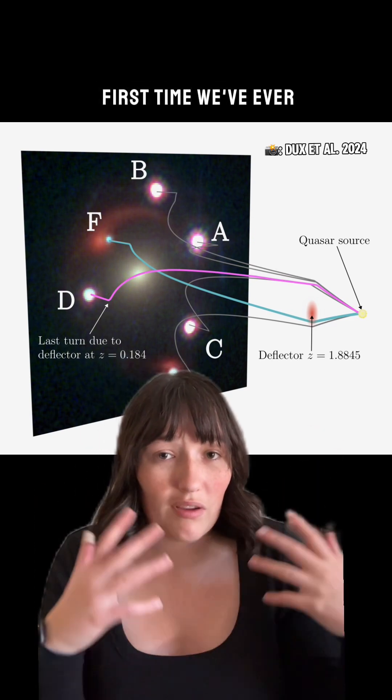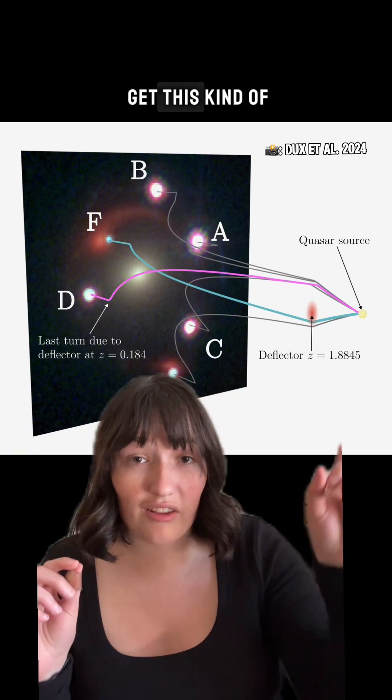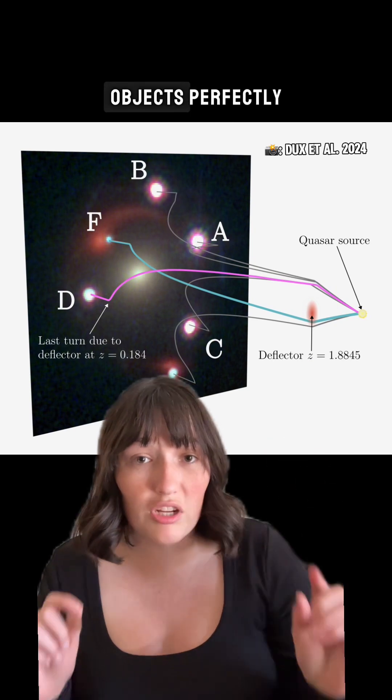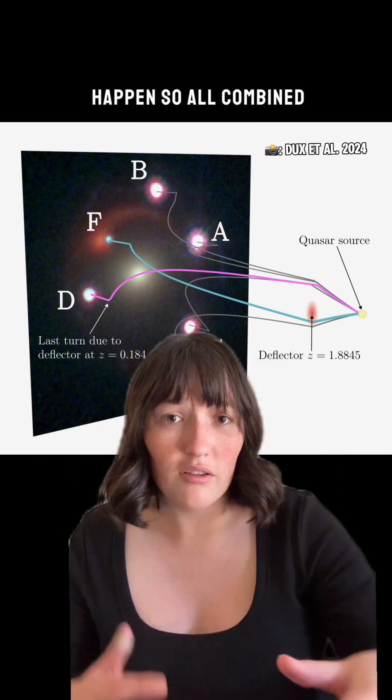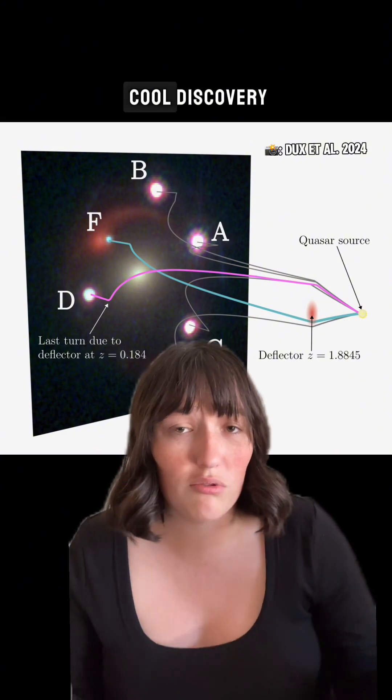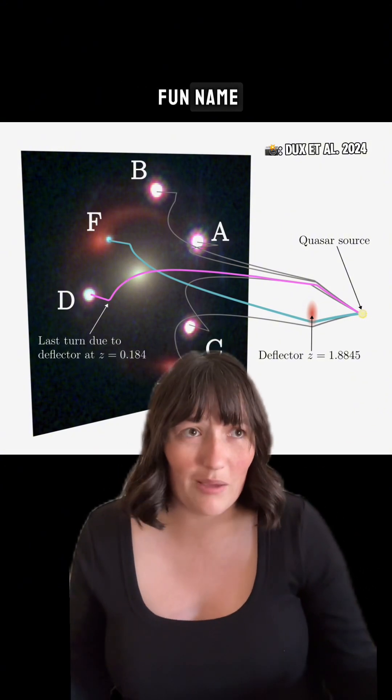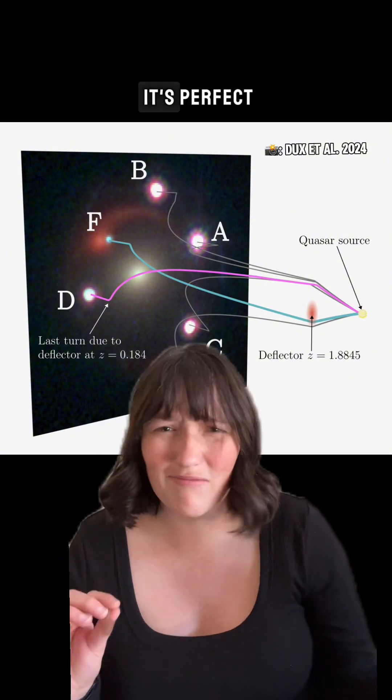And this is the first time we've ever seen this, because it's hard to get this kind of alignment between the three objects perfectly, and the mass of the lenses needs to be exactly right for the zigzag to happen. So all combined, this is a really cool discovery. Plus it's got a fun name. I mean, Einstein zigzag? It's perfect.